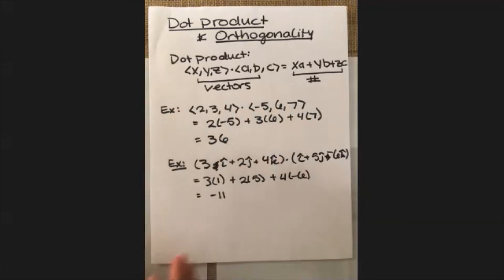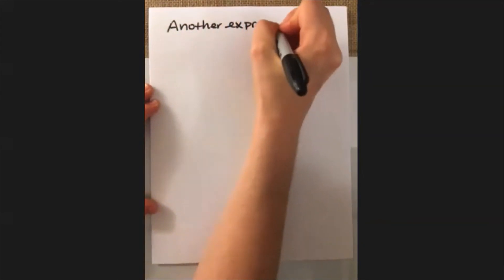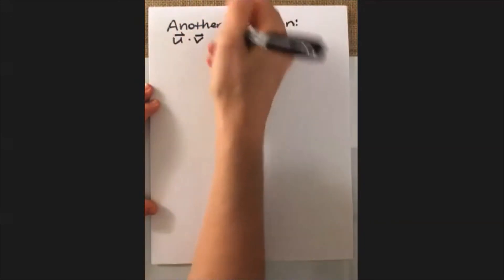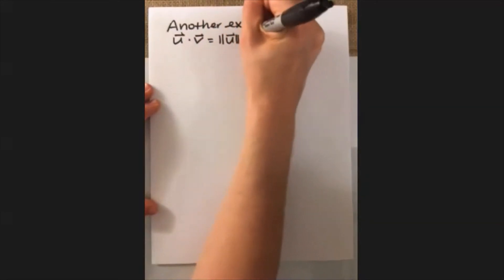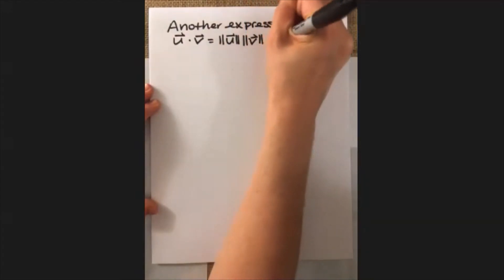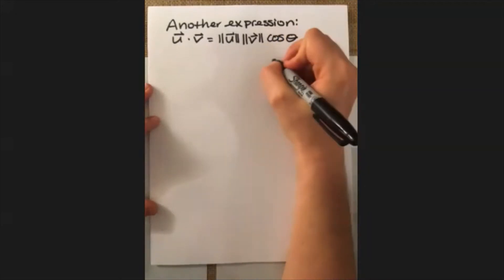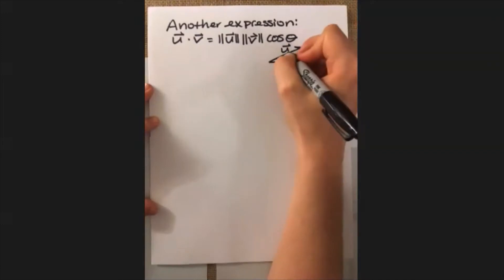Now this has a very geometric interpretation, which is probably best seen through an alternative expression for the dot product. And this is if we want to have a vector u dot product vector v, that's equal to the length of u times the length of v times the cosine of the angle that is between them.